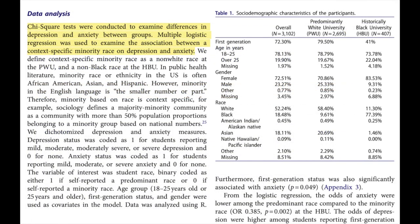Second, peer-reviewed journal articles typically have a lot of technical language and potentially statistics, because they are written for other researchers in that field. They are not written for a general audience. Technical language, or jargon as it can be called, is usually specific to the larger discipline and that can make it difficult for someone just beginning in that discipline to understand. Think about if the paper has words or phrases that you don't know or had to look up. If that is happening quite often, there's a good chance you are reading a peer-reviewed article.